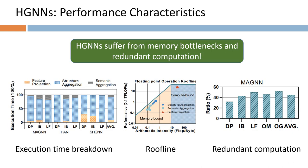In the structural aggregation stage, there are multiple shared vertices among metapath instances. This results in repeated aggregation for these metapath instances. Moreover, heterogeneous graph neural networks are highly suffering from memory bottlenecks.